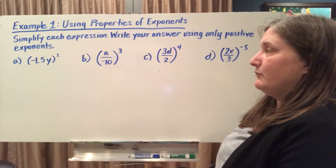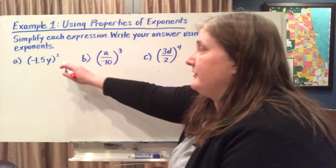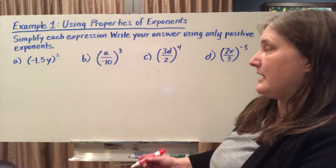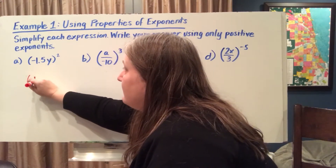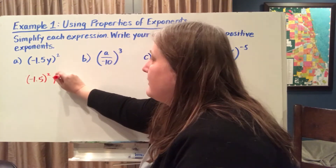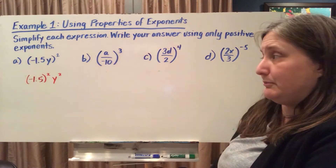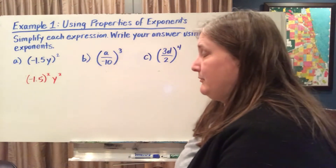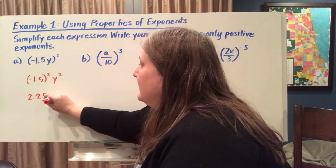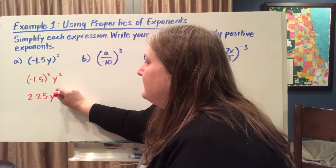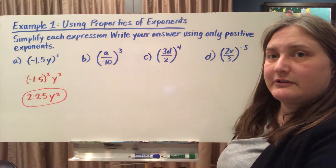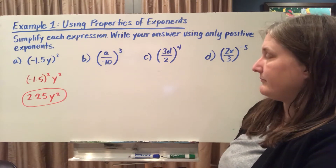So in this case, I have negative 1.5 times y, all to the 2nd power. I don't know the value of y, but I know that I can square each individual factor here. So negative 1.5 can be squared and y can be squared. Negative 1.5 times negative 1.5 gives me 2.25. But y squared I can't simplify any further because I don't know the value of y. So 2.25y² is our final simplified answer.